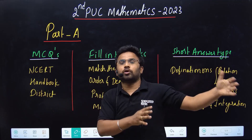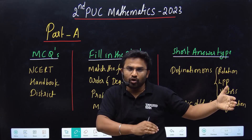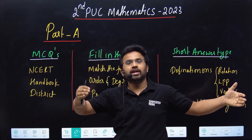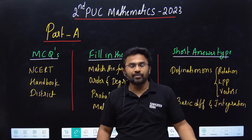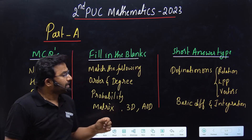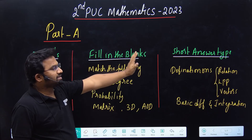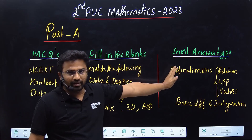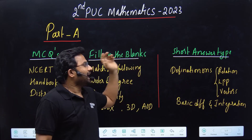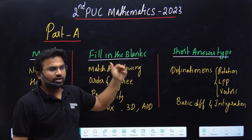Part A should be kept as the last option — only focus on it when you've already crossed 85 or 90 marks. Coming to Part A videos: Part A carries 20 marks usually, and among all three sections you have MCQs, fill in the blanks, and short answer type.